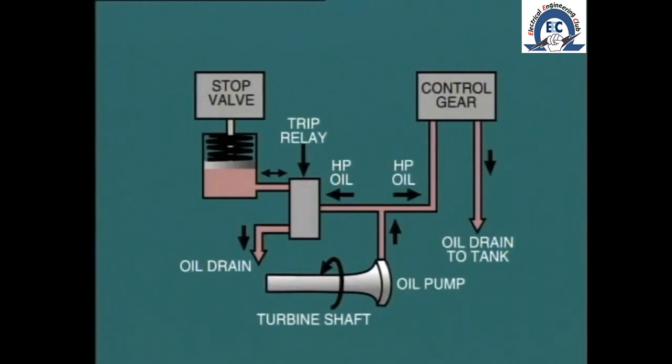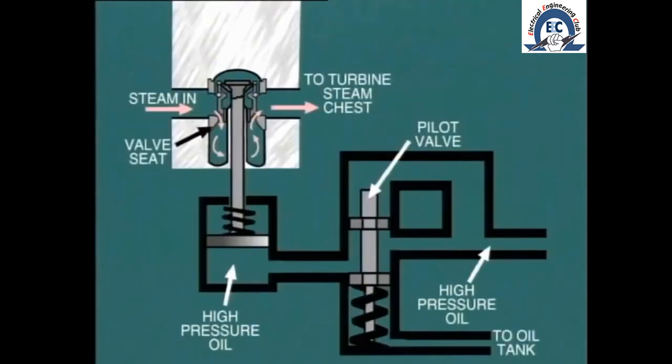The same hydraulic oil supply is used to operate the turbine stop valve. One common arrangement is shown here. During normal operation, the pilot valve is open and allows high-pressure oil to enter the space below the piston and hold the stop valve open against the compression of this high-powered spring.